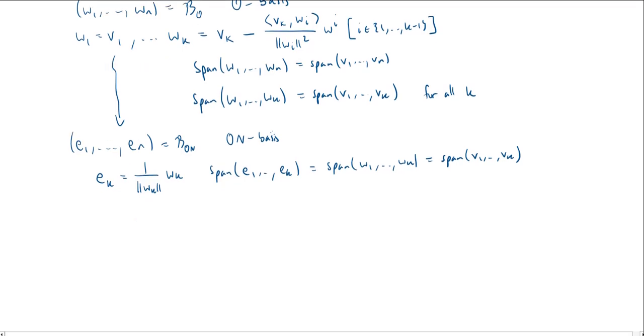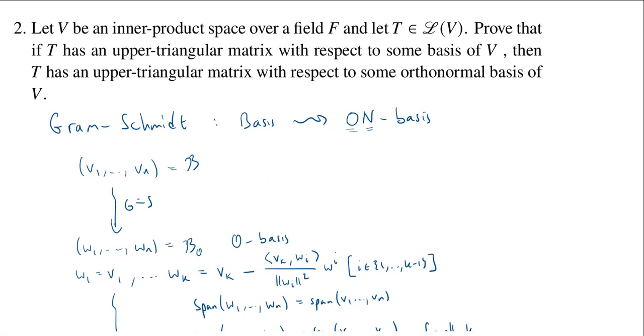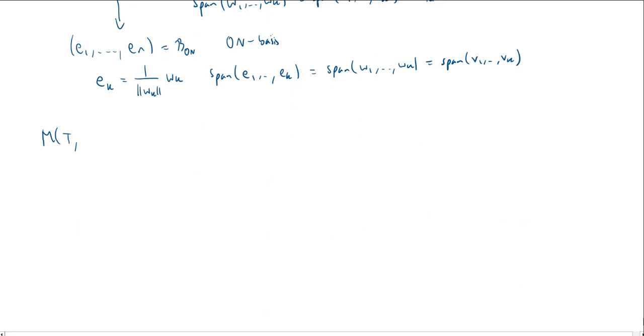So now how does this all relate to the matrix? Well, our assumption at the beginning was that T had an upper triangular matrix with respect to some basis. This B up here, that's going to be the matrix that we're saying T was upper triangular with respect to. So M of T, B, we know had the form of an upper triangular matrix. And so if we had V1, V2, dot dot dot, VN, V1, V2, VN, we see here that the span of V1 through VK...